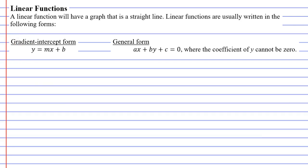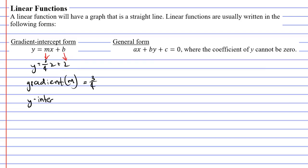An example of gradient intercept form may be the function y equals three quarters x plus two. Both forms look exactly the same except they've replaced m with three quarters and b with two. m is the symbol we use for gradient, so the gradient for this function is three quarters. b is the symbol we use for y-intercept, so the y-intercept for this function is two. Gradient intercept form is really useful because it's easy to find the gradient and the y-intercept, which comes in really handy when you want to sketch a graph.